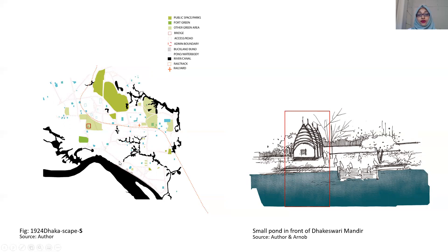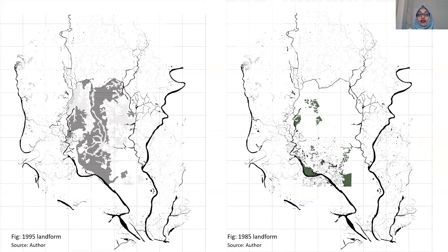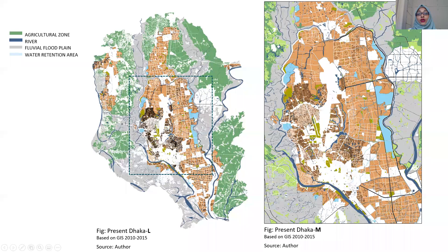One more important intervention was a dike and an embankment, which together formed the first official public open space in the British period. After liberation in 1971, expansion continued mostly toward the north, occupying all lowlands, wetlands, and any remaining vacant areas for development. At present, the city has a very tiny amount of open space left inside it, and not only is the quantity smaller, but the quality of those spaces is very poor.